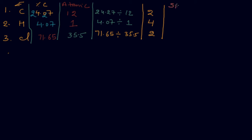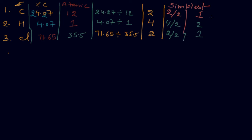To get the simplest ratio, we divide each value by the smallest: 2 ÷ 2 = 1, 4 ÷ 2 = 2, and 2 ÷ 2 = 1. So the last column gives us the empirical formula — carbon has 1 atom, hydrogen has 2 atoms, and chlorine has 1 atom.